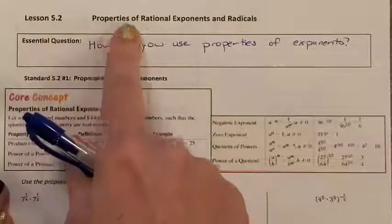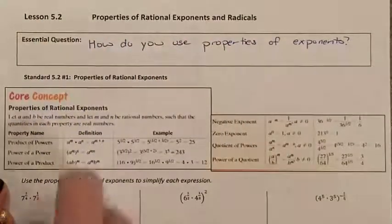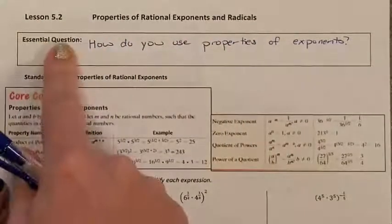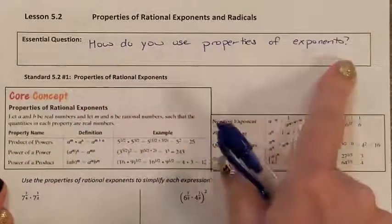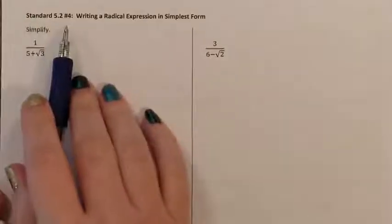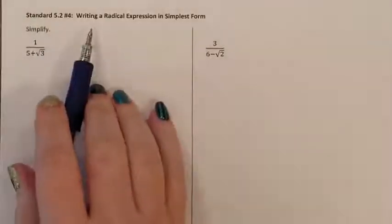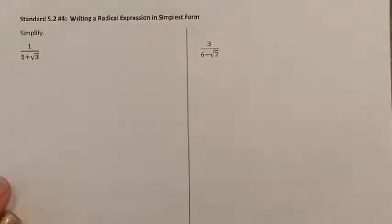Lesson 5.2, properties of rational exponents and radicals. Our essential question today: how do you use properties of exponents? Standard 5.2, number 4: writing a radical expression in simplest form.